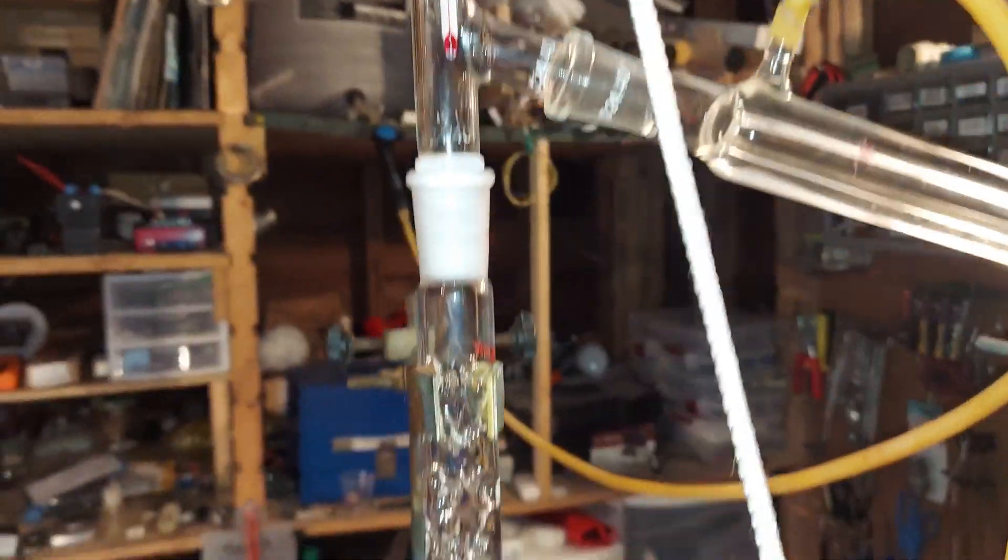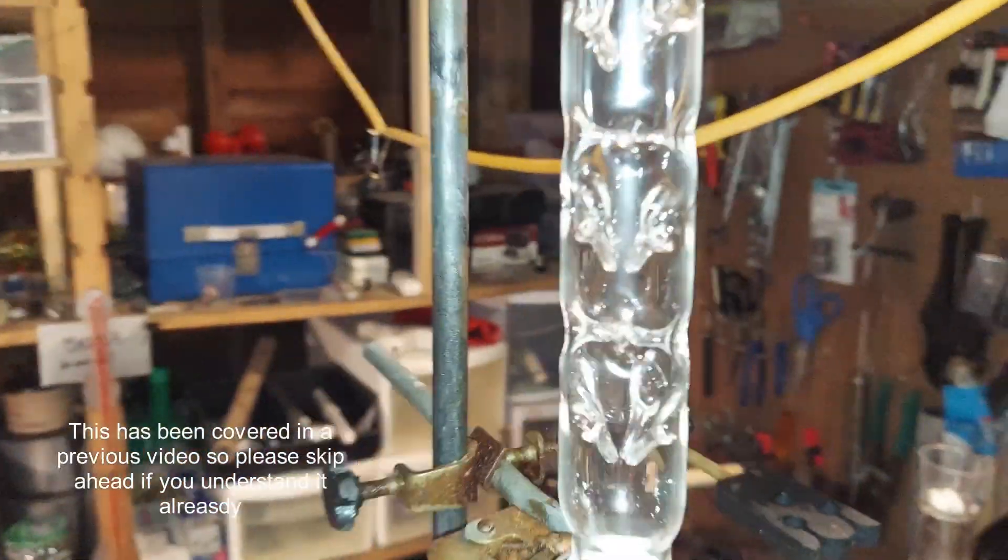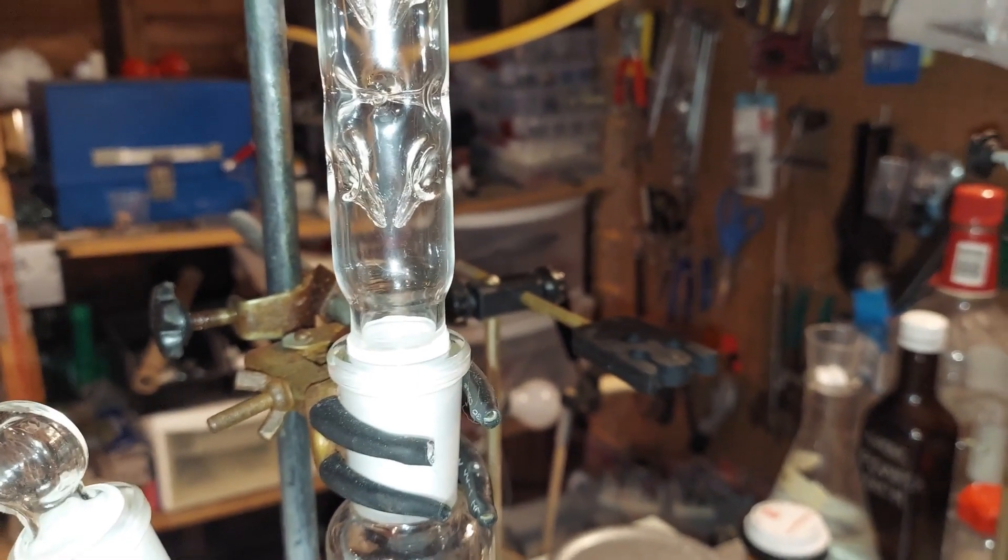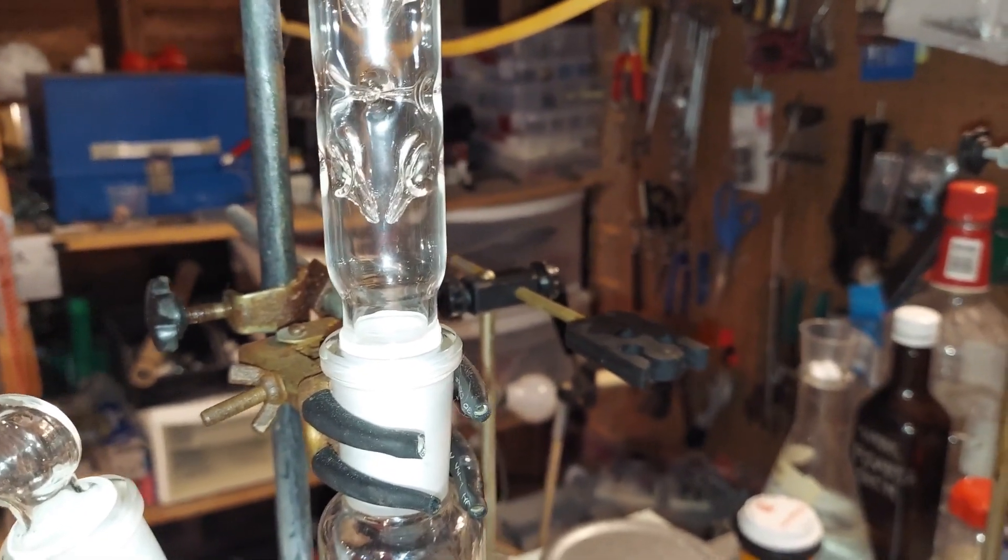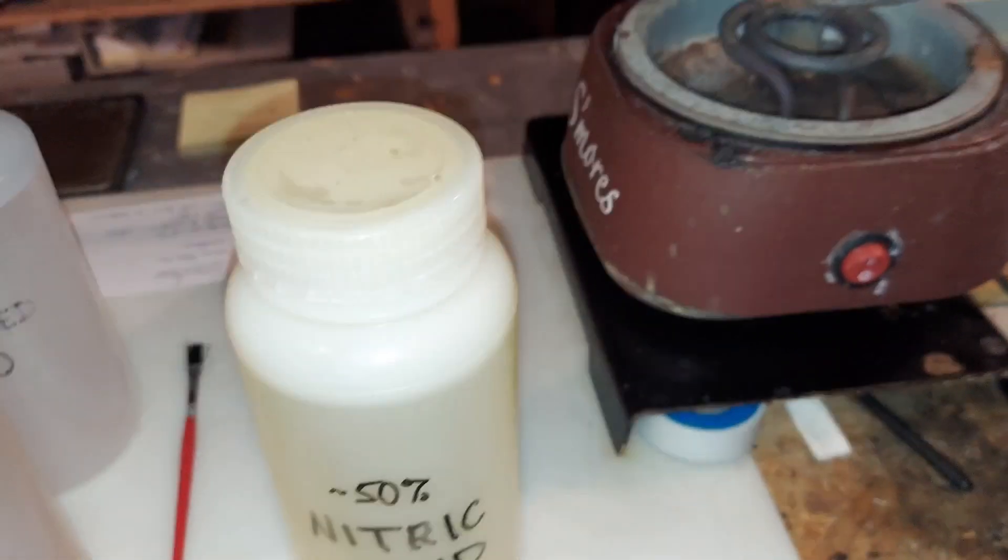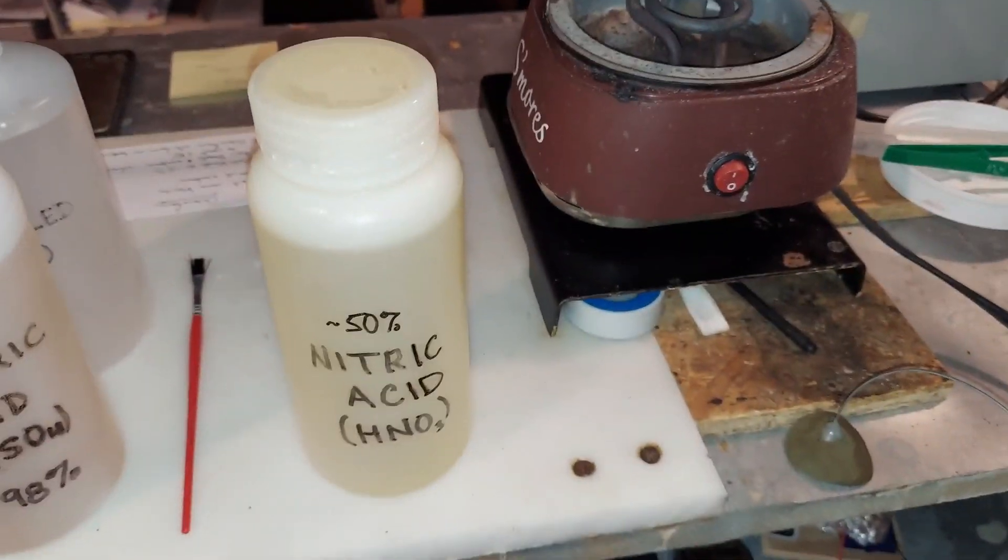This column right here is where it fractionates. What's fractionating with the nitric acid is the actual pure nitric acid and the water that's mixed in it to make it 50%.